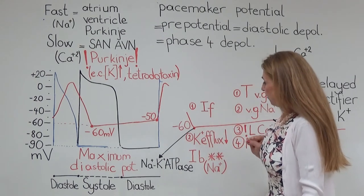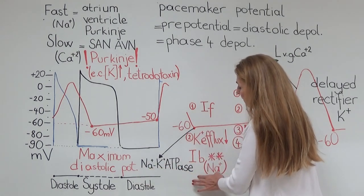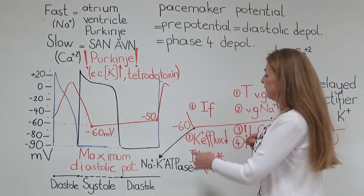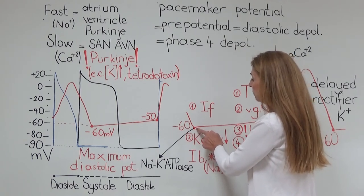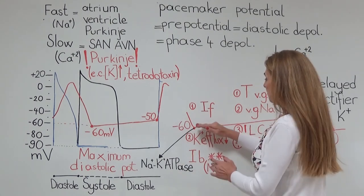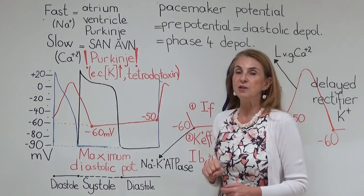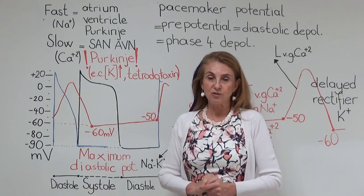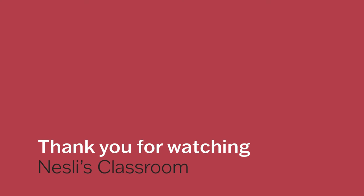One last point: some researchers believe that sodium-potassium ATPase activity may modulate the maximum diastolic potential, thereby affecting the excitability of the cell. I have tried to explain the slow action potential of the heart. I hope it has been useful. Thank you for watching.